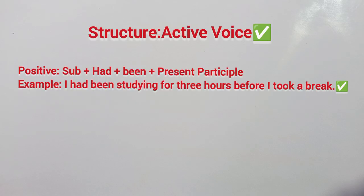The structures. First of all, in Active Voice — the structures. Positive: Subject + Had + Been + Present Participle. Present Participle means the verb's fourth form. For example: 'I had been studying for three hours before I took a break.'